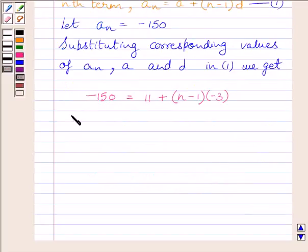Now subtracting 11 from both the sides we get minus 150 minus 11 is equal to (n minus 1) multiplied by minus 3.